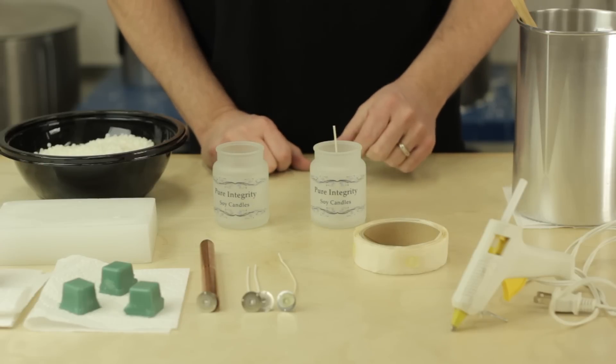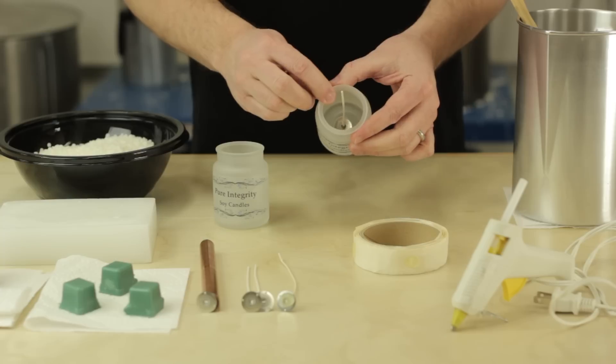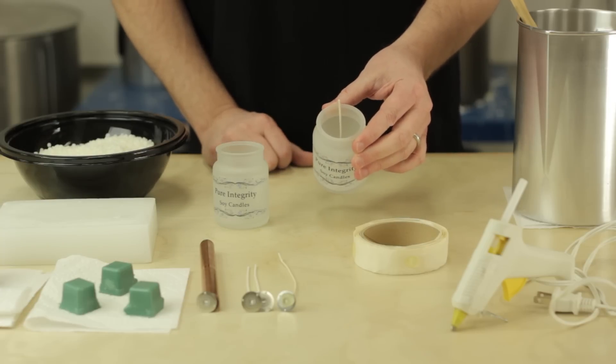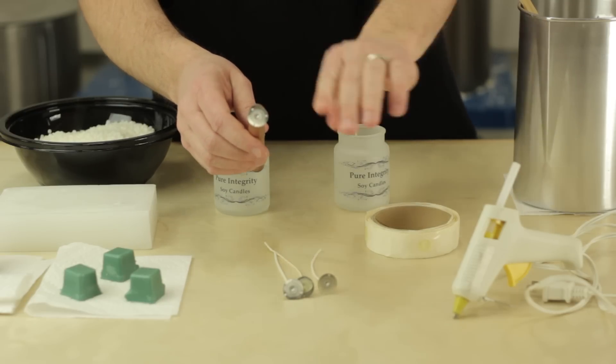Here we have two jars. You can also use a variety of different types of food grade jars at home, like baby food jars, even a peanut butter jar. One of them already has a wick in it. I'm going to show you how to wick this second jar.